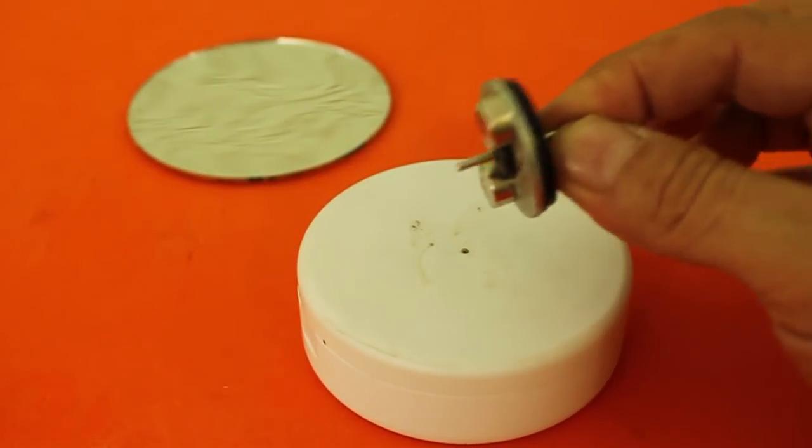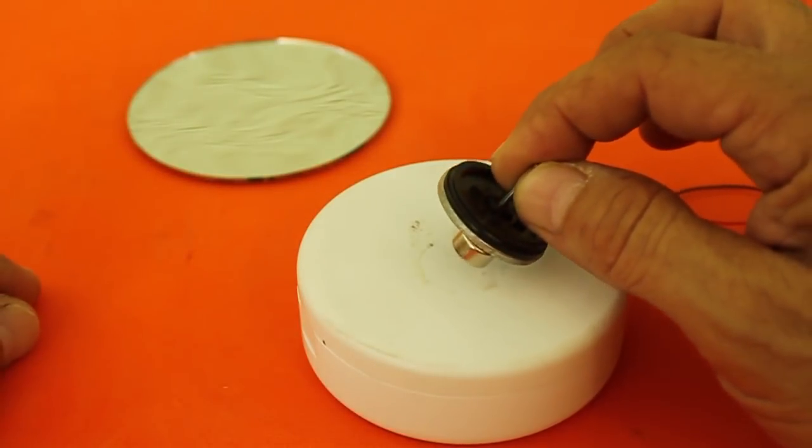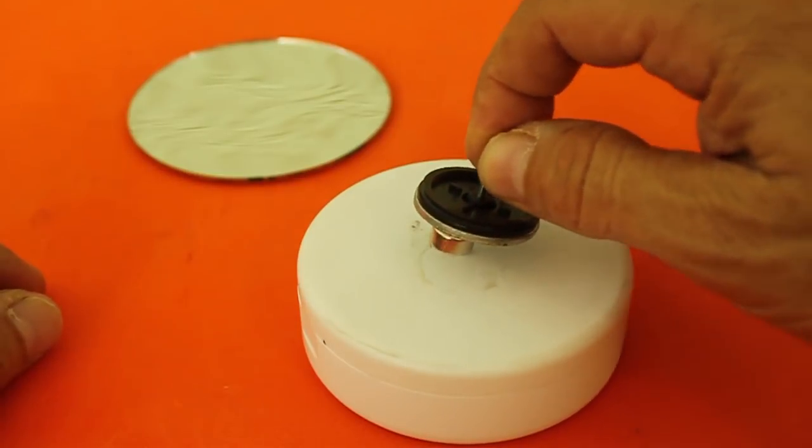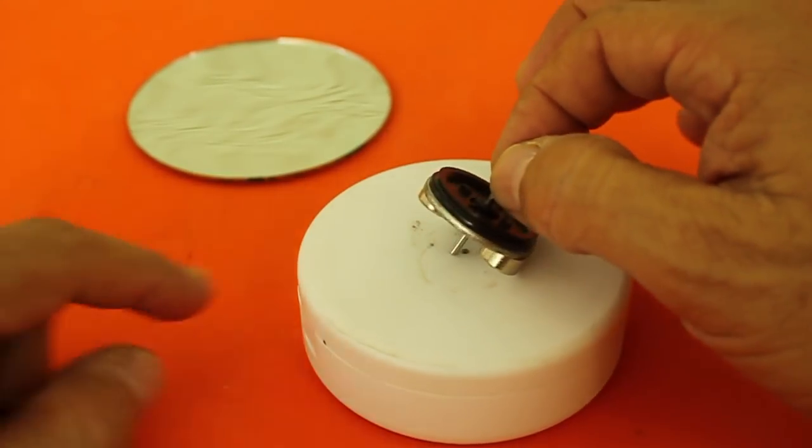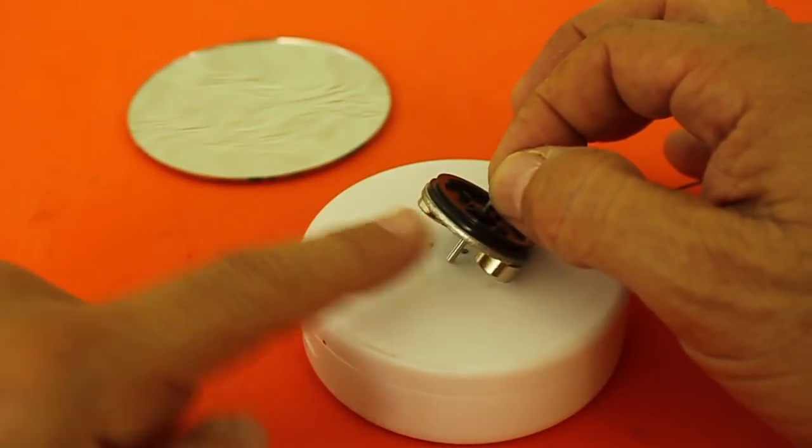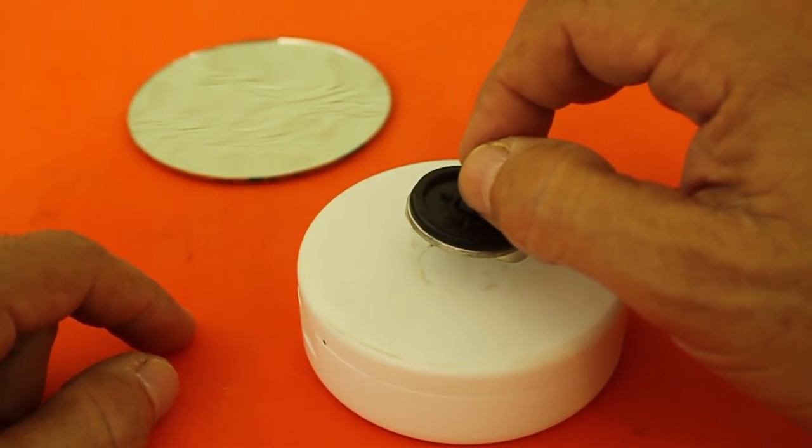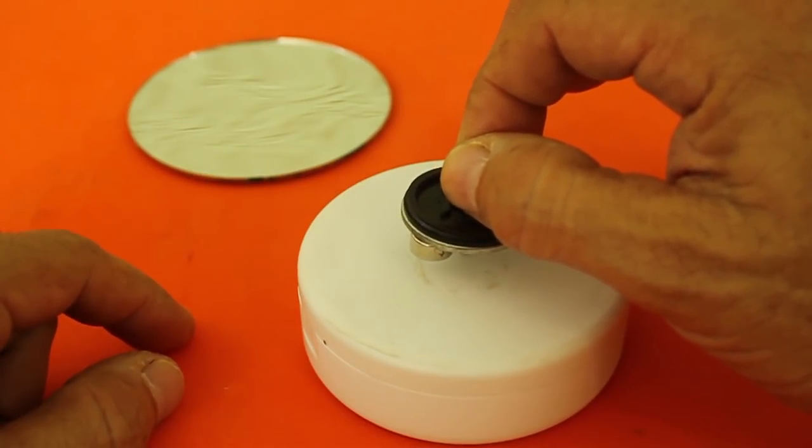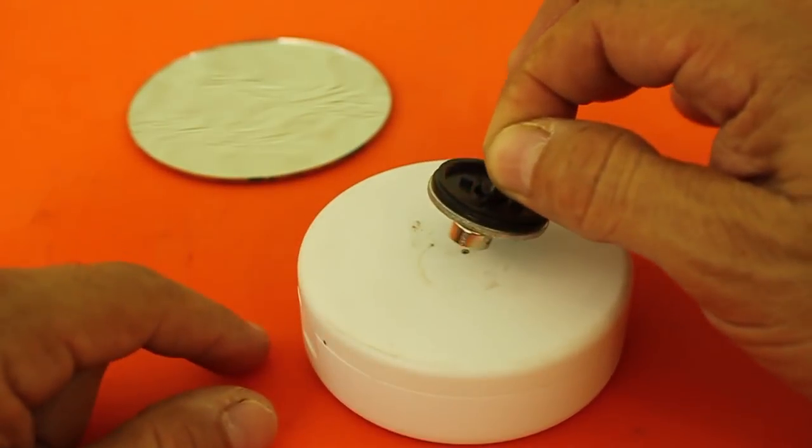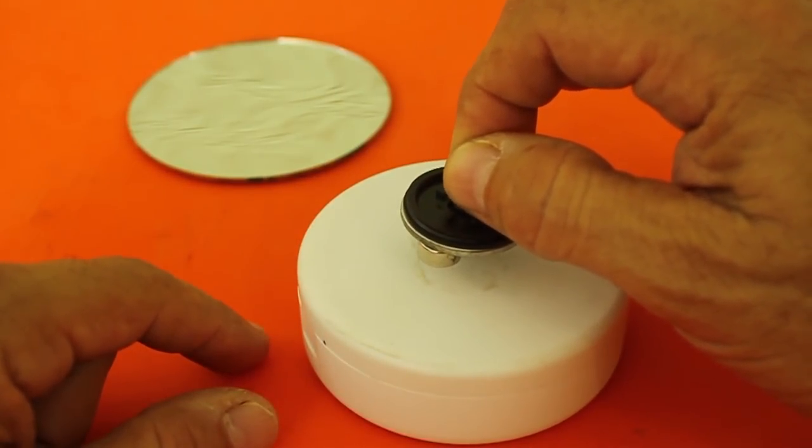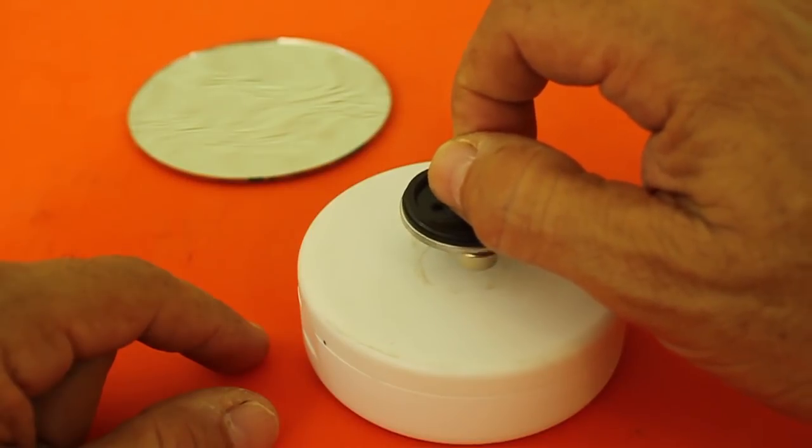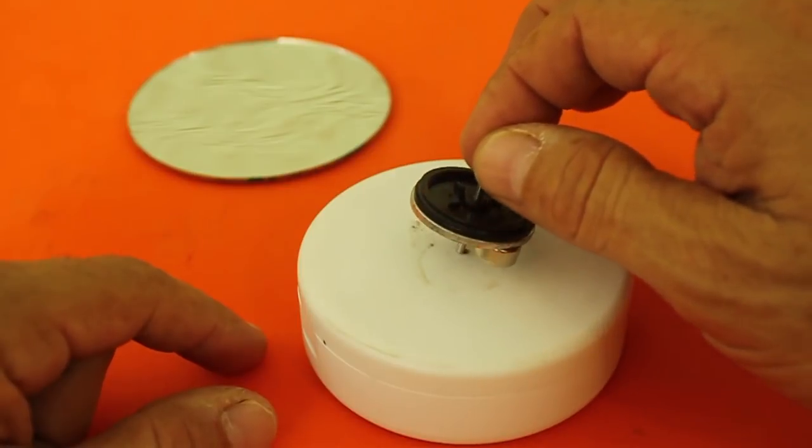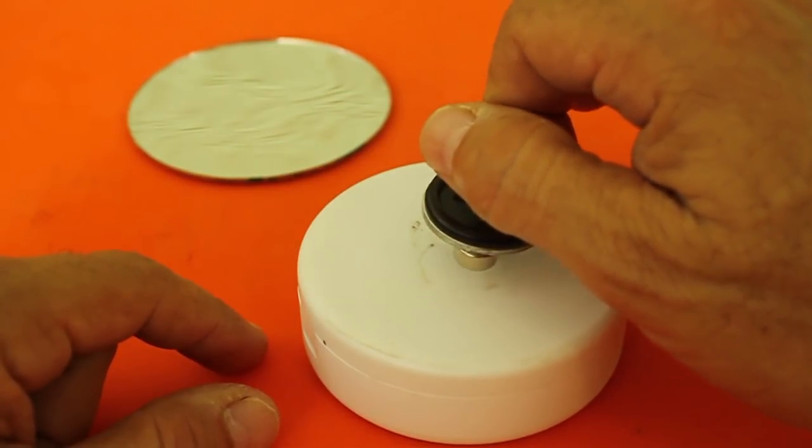When one of the magnets passes near the reed switch, it closes and energizes the coils. The magnets try to align with the coils, but then the reed switch is no longer close to the magnets and the coils are not energized anymore. The top continues to rotate because of its inertia until the other magnet closes the switch again and gives another push to the top. This process repeats every half revolution and maintains the spinning top in rotation.